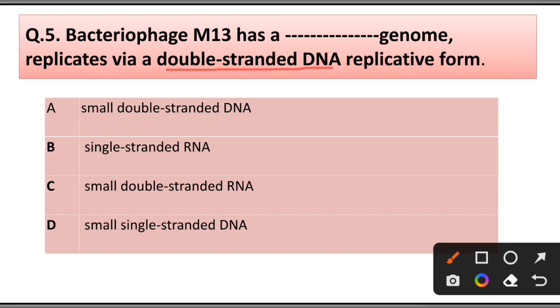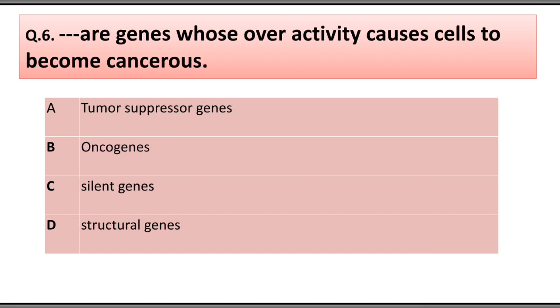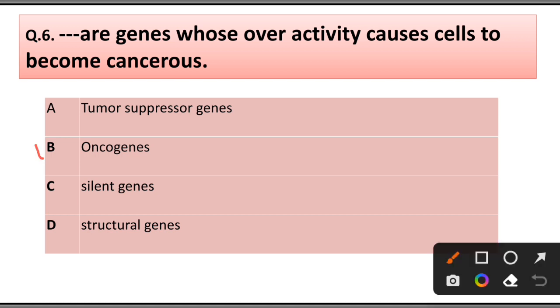Question number 6: Genes whose overactivity cause cells to become cancerous: A) Tumor suppressor gene, B) Oncogene, C) Silent gene, D) Structural gene. Answer is option B, oncogene.